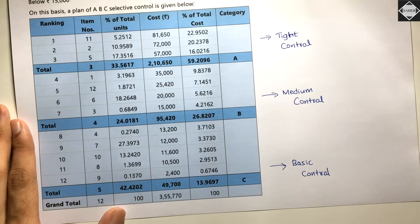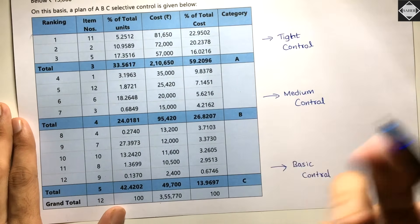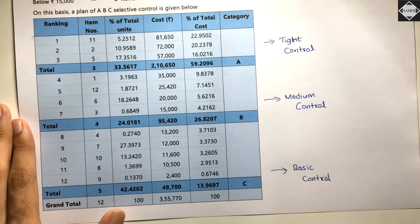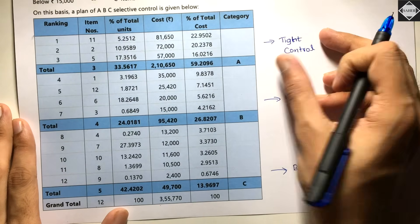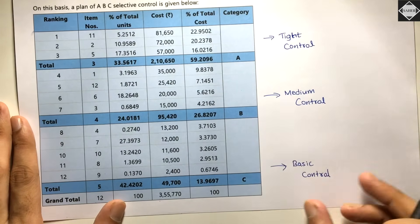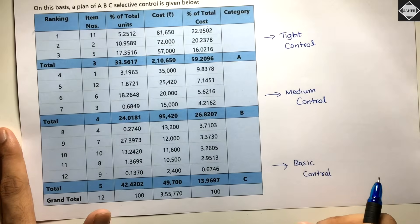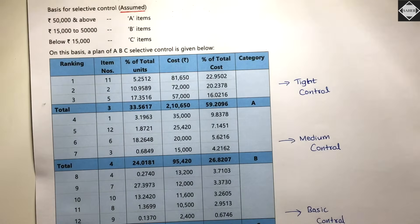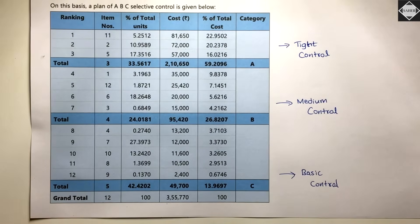You will have category-wise subtotals — three items in A, four in B, five in C — and a grand total of 12 items, 100%, and ₹3,55,770. The management controls differ: Category A is tightly controlled, Category B has medium control, and Category C has very basic/minimal control. That is all — the solution is complete. Hope you understood. See you in the next video!